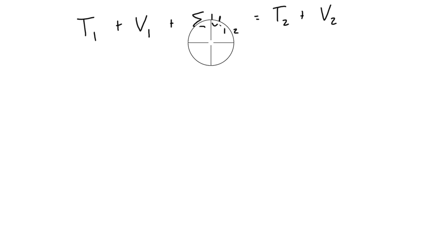This work term right here is referring to non-conservative forces, which in our case is basically always going to be friction. So if there's no friction present in the problem, that will drop off and this expression can simply just be written as T1 plus V1 is equal to T2 plus V2.